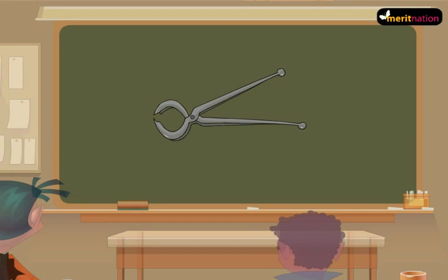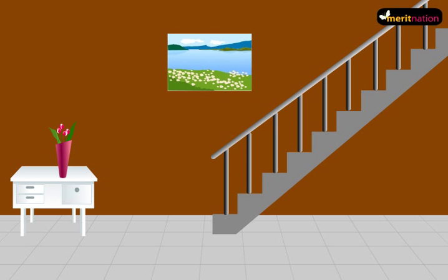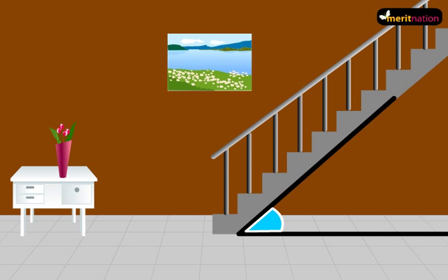Ok, look at the arms of the tong. Look at the angles made between the arms. Look at the stairs. Look at the angle made by the stairs with the floor. These are all examples of acute angles.